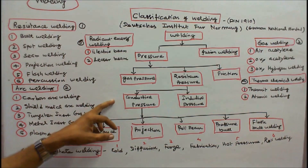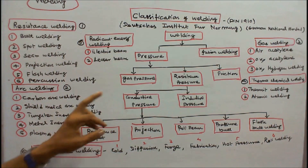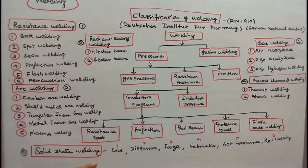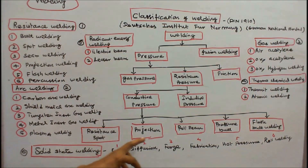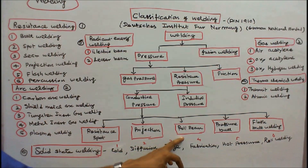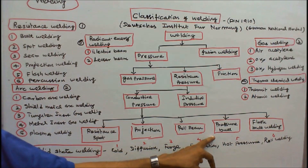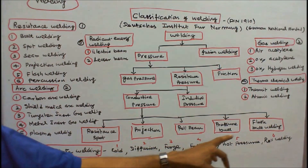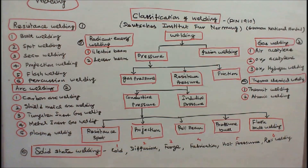The conductive pressure welding has five types: one, resistance spot welding; number two, projection welding; number three, roll seam welding; number four, pressure butt welding; number five, flash butt welding. Number four is gas piston welding.